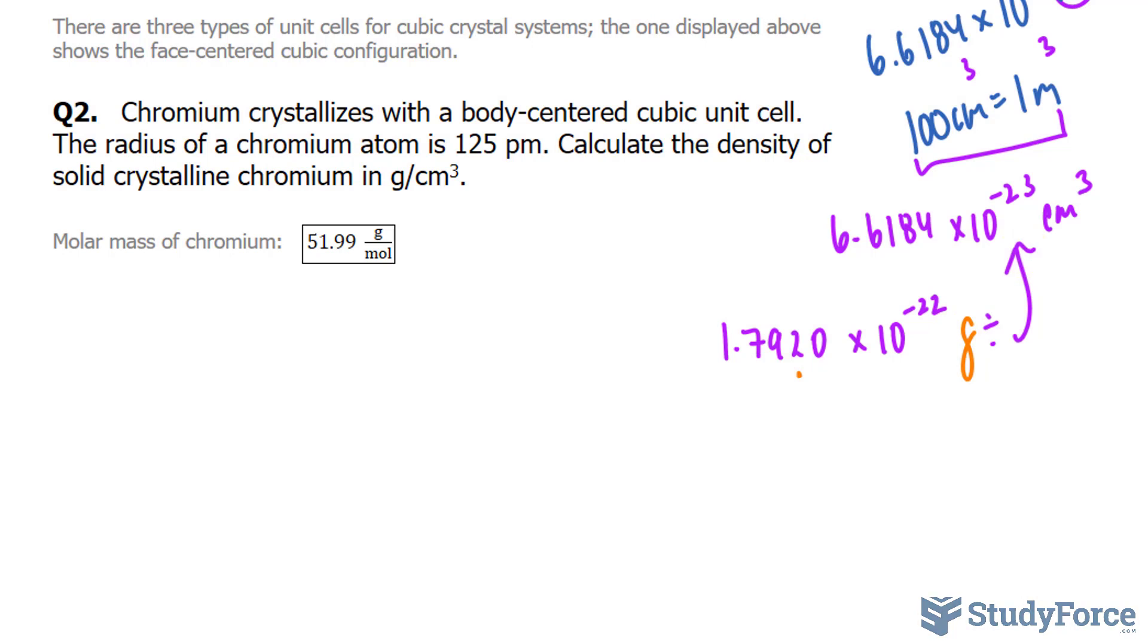Remember, this has to be 3 significant figures, because this is 3 significant figures, and this is 4. So we use the smaller of the two.